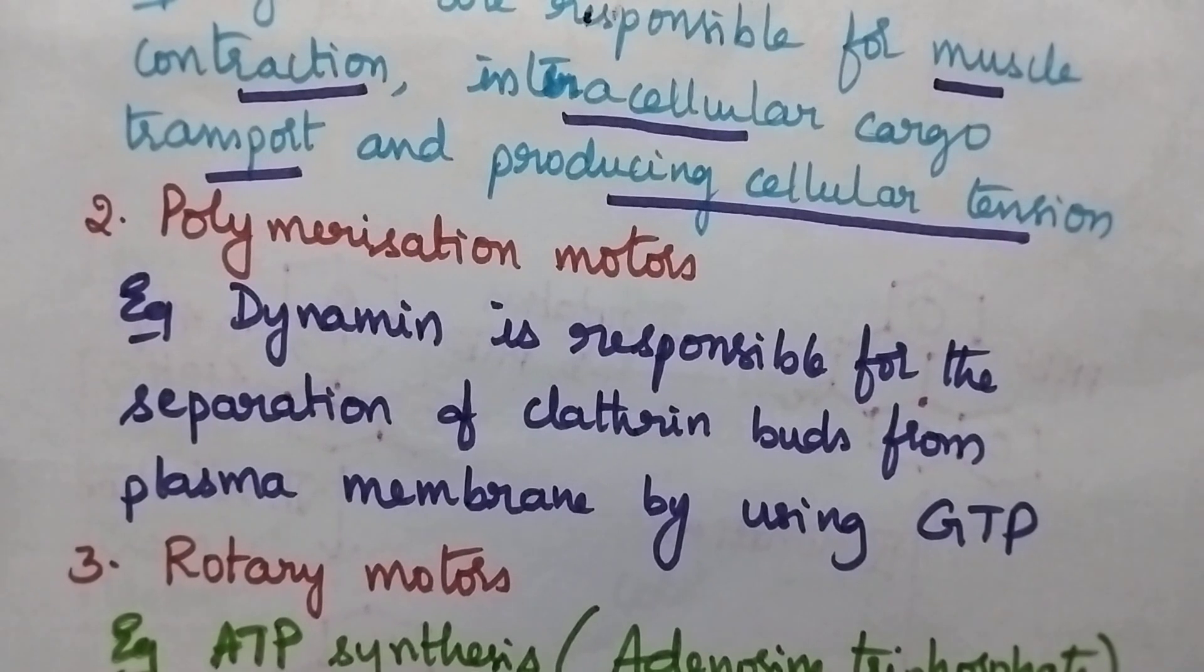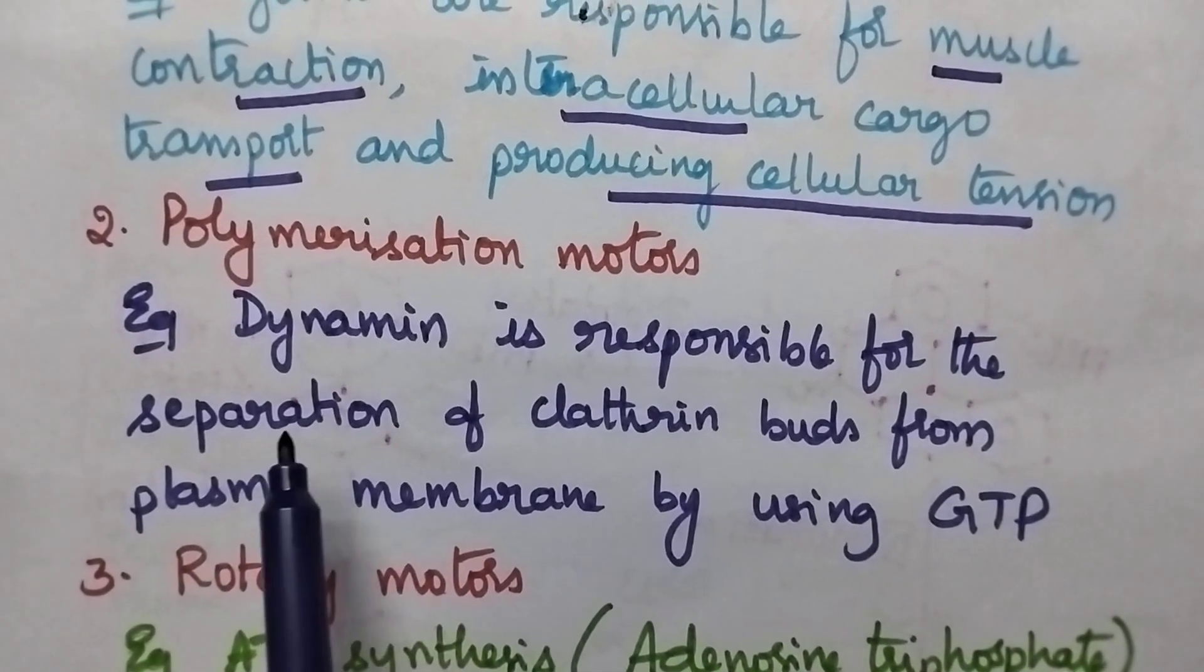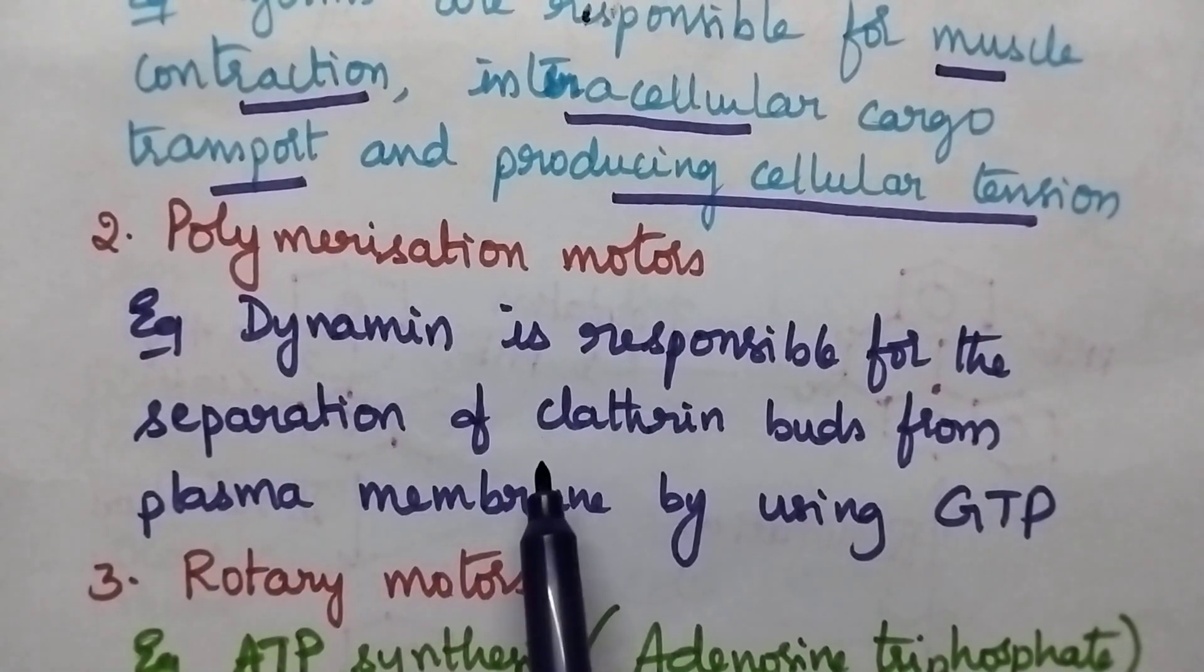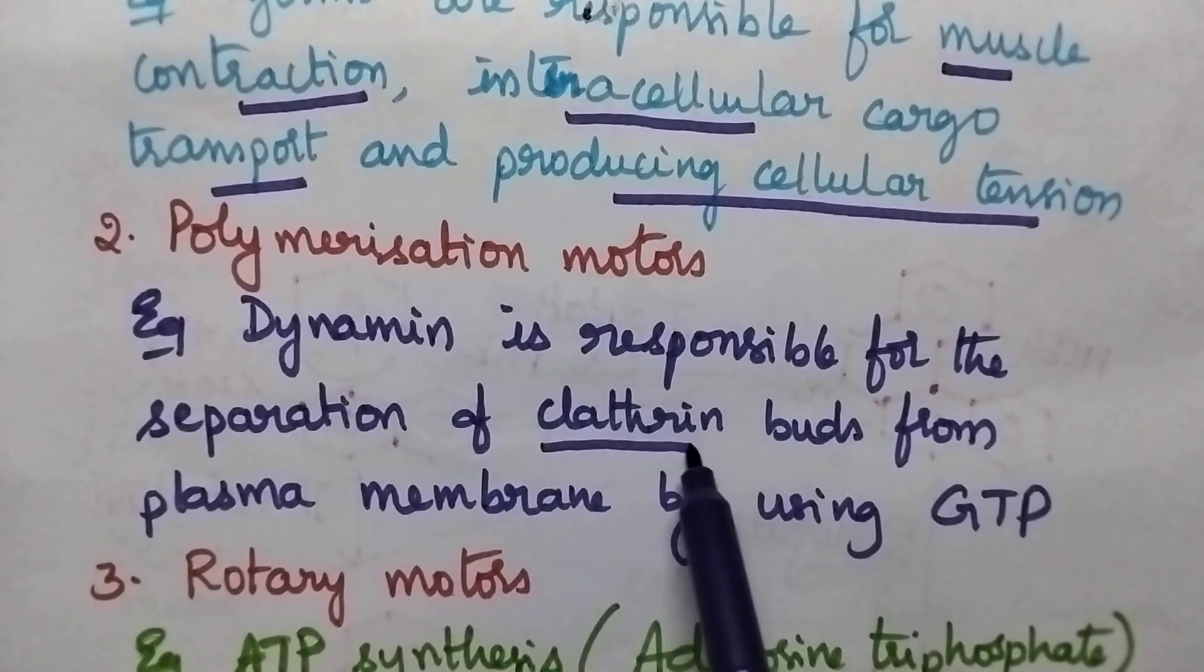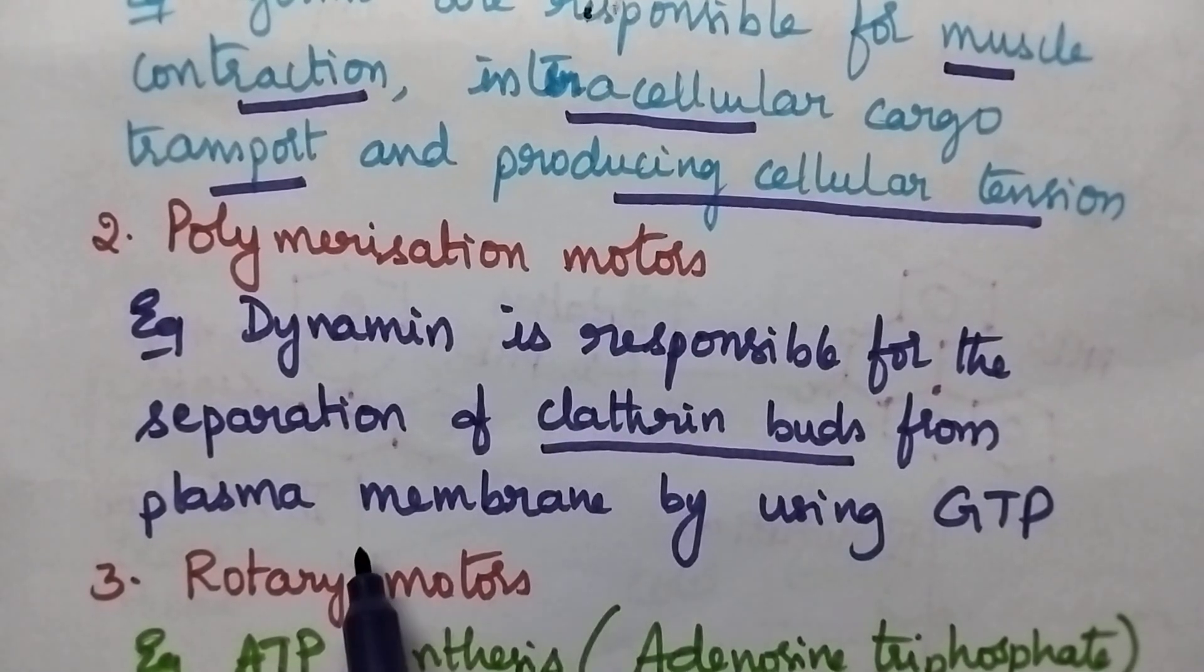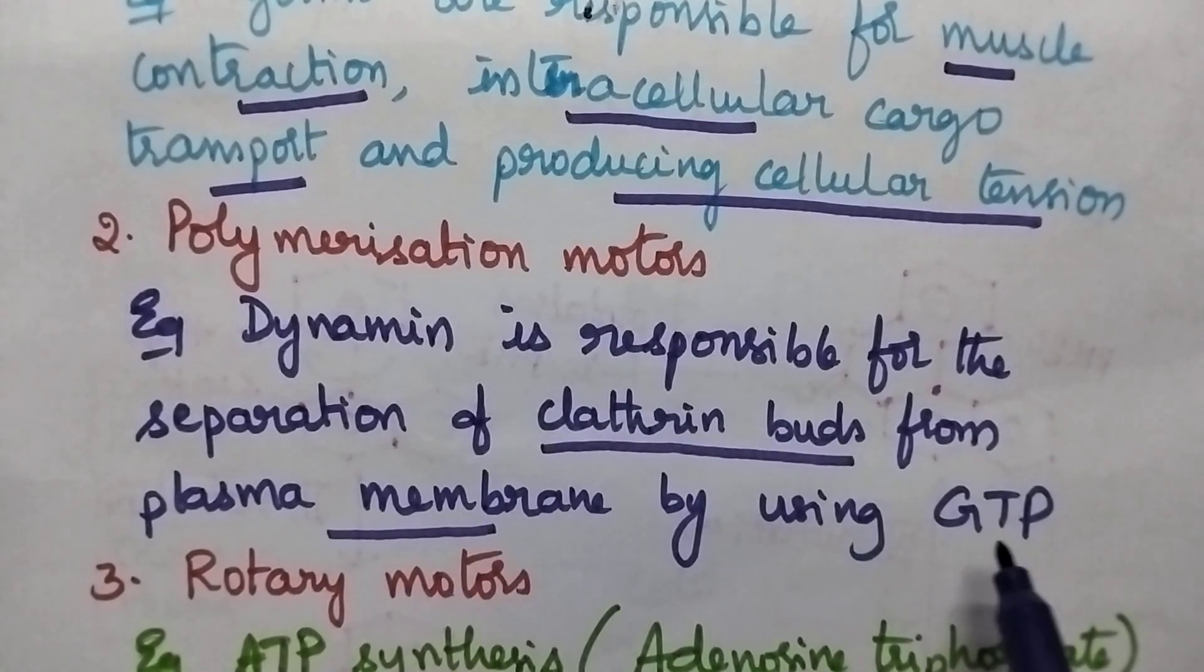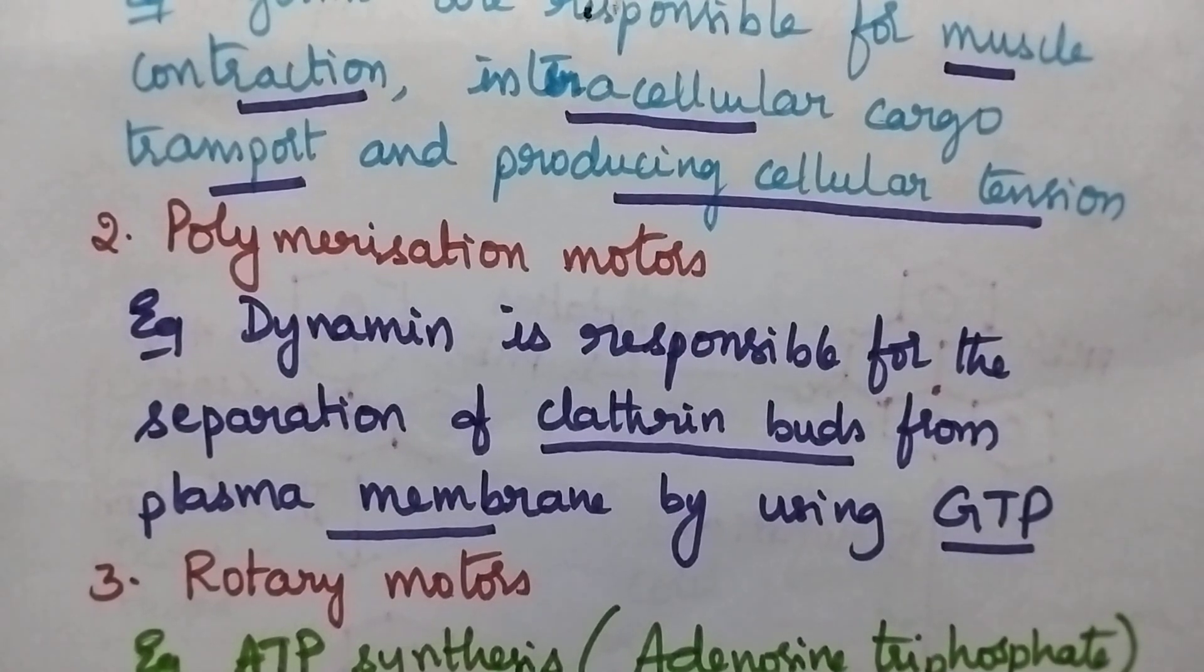Coming to polymerization motors, a good example is dynamine, which is responsible for the separation of clathrin buds from the plasma membrane, and it is being done by GTP.